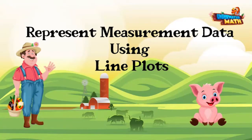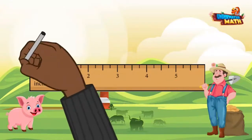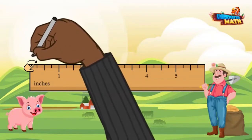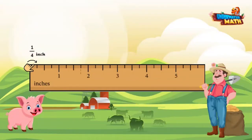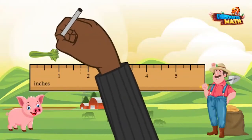Here is a ruler. Each inch is broken apart into four parts, that means each line represents one fourth of an inch. First, always make sure you line up your object starting at zero, then look at where your object reaches on the ruler.